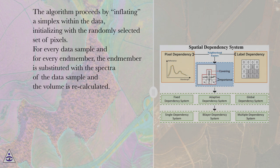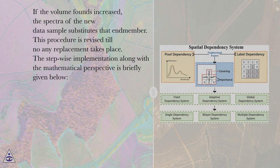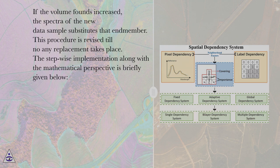For every data sample and for every N-member, the N-member is substituted with the spectra of the data sample and the volume is recalculated. If the volume is found increased, the spectra of the new data sample substitutes that N-member. This procedure is repeated until no replacement takes place.